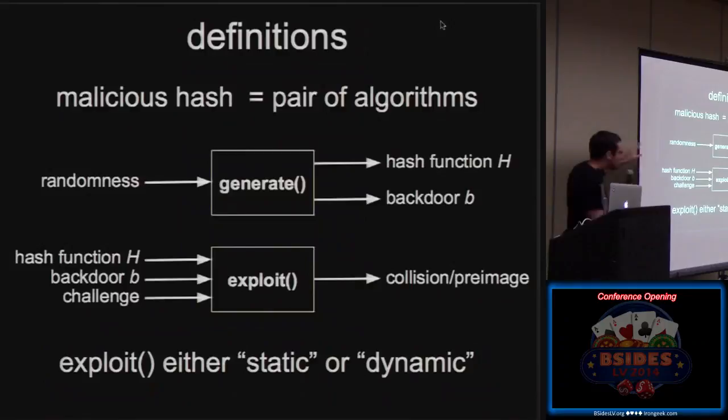So I won't go into all the details. You can look this up in the paper. But just very briefly, we define a malicious hash function as a pair of two algorithms. The first one is generate. So we take some randomness, some seed, some whatever, and we generate a hash function, so some piece of code or pseudocode, and a backdoor. So the backdoor can be a number, can be a string, can be whatever. And then we have the exploit function, which takes this function h, the backdoor, and optionally a challenge. So the challenge might be an image if you want to invert a hash function.